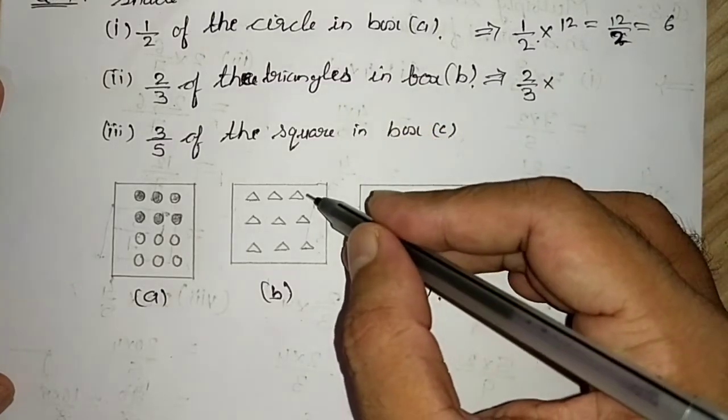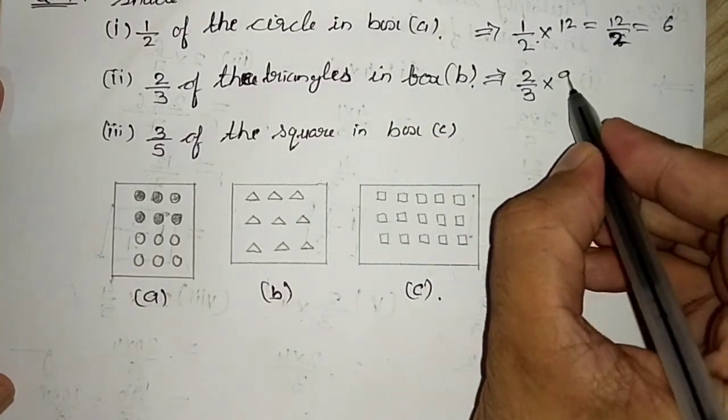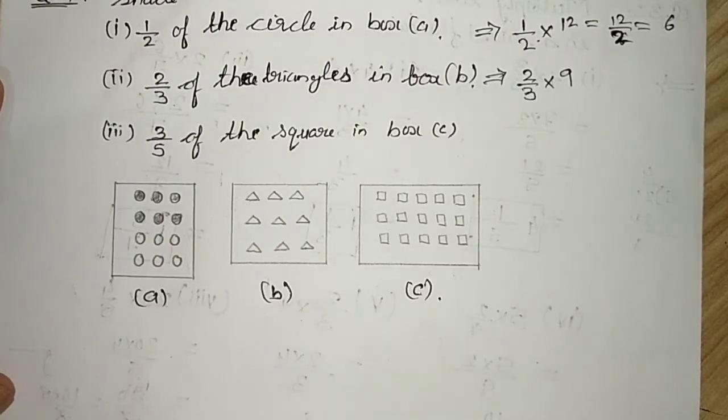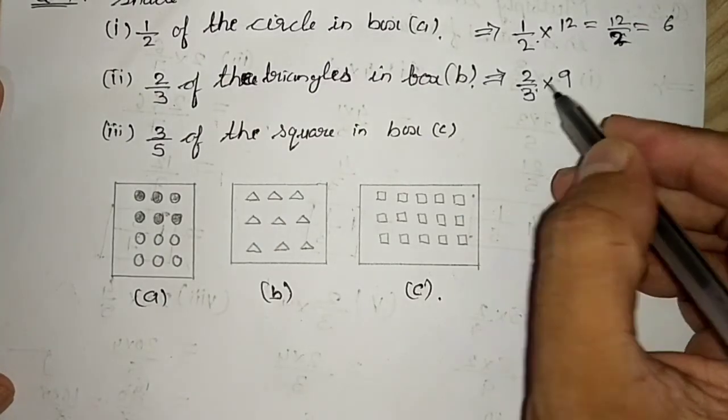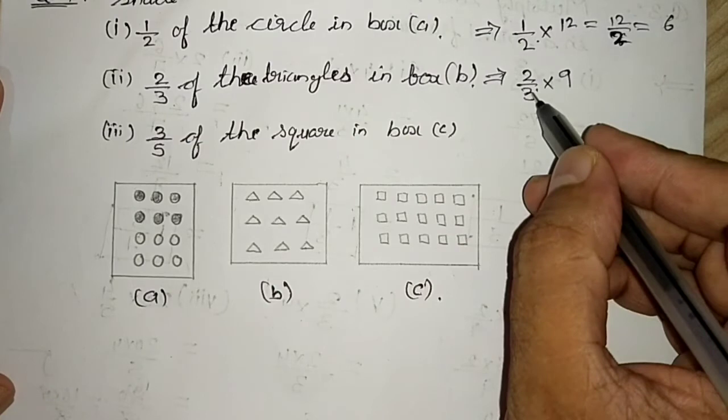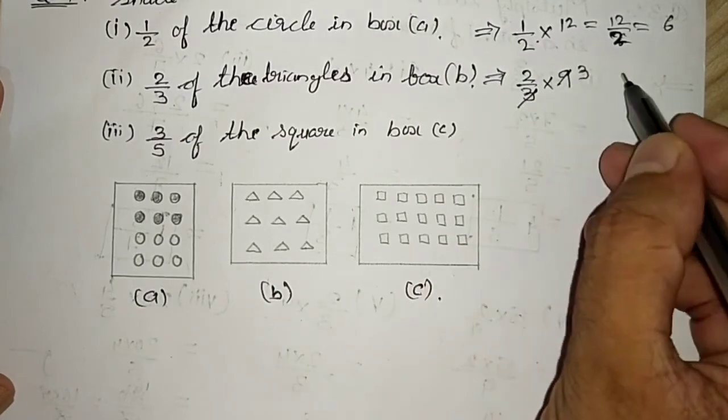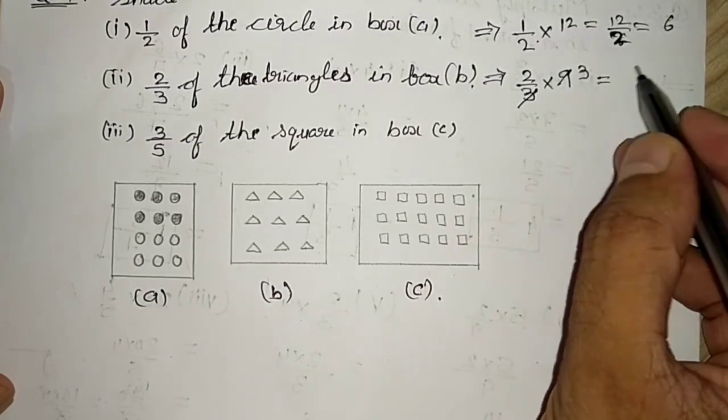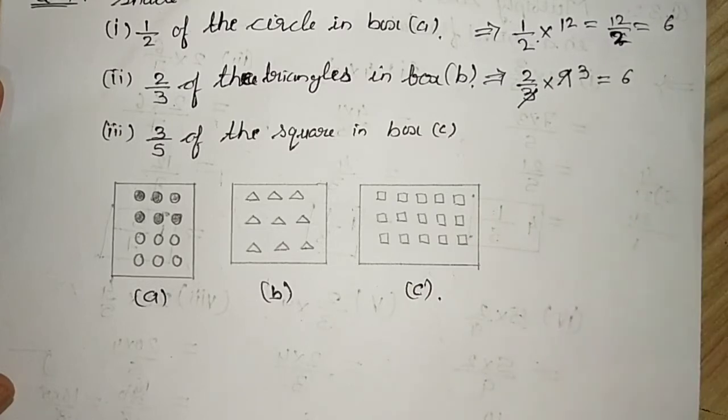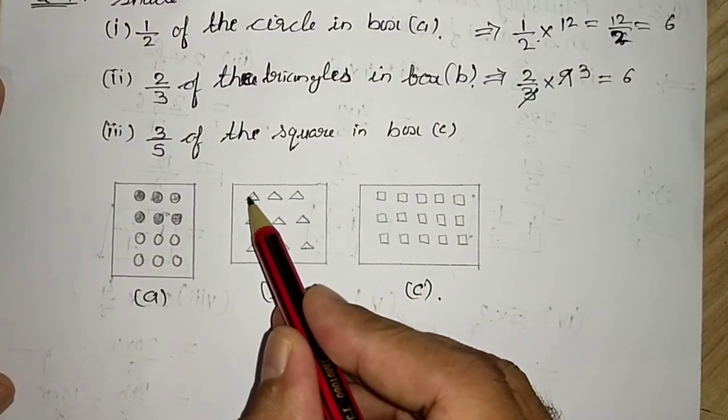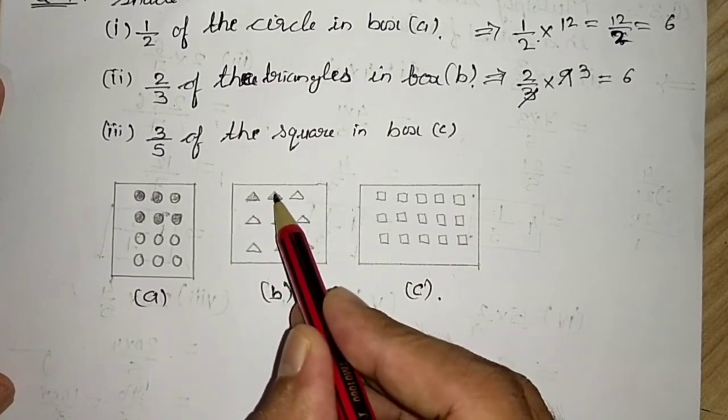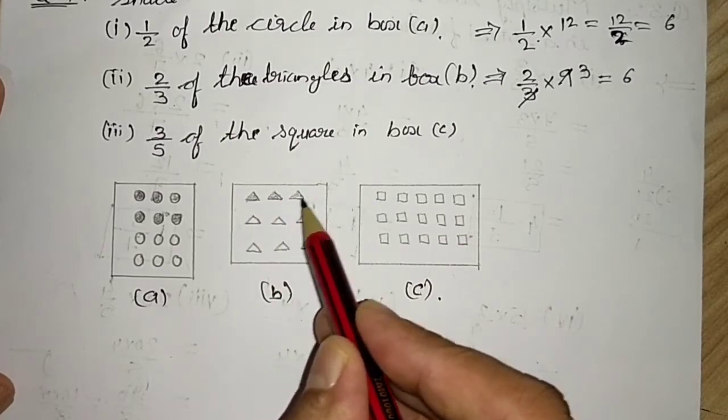Triangles in the box, triangles in the box are 9. So I will multiply 2 by 3 of 9 and I will cut because it is cutting out 3, 1s and 3, 3s, so it will be 2, 3s. So you have to shade six triangles which is given in box B.